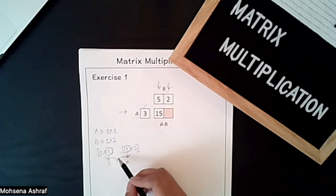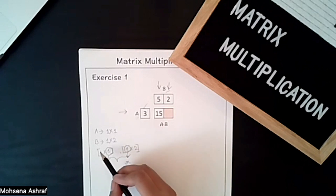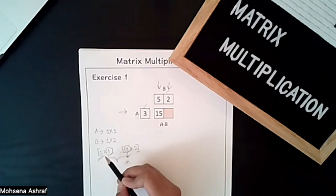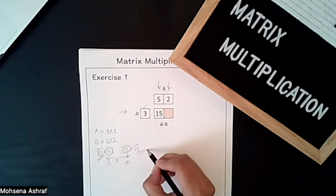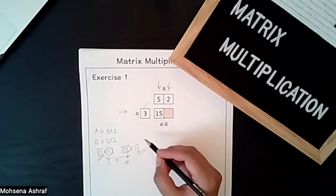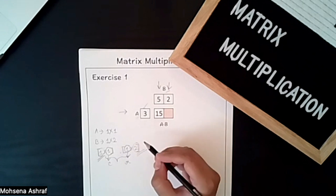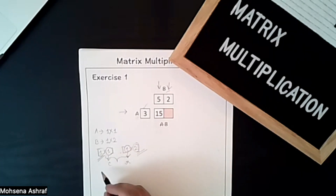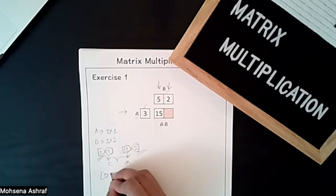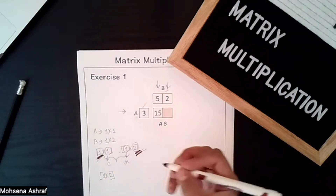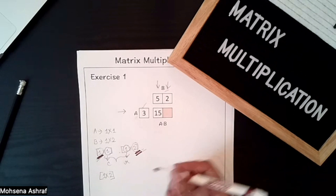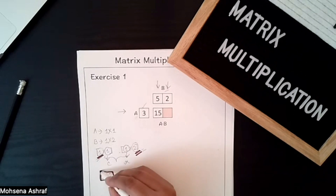The other thing we can get from the dimensions is: the first number of the first matrix (the row) and the last number of the last matrix (the column) give us the resultant matrix's dimension. So multiplying 1×1 by 1×2 gives a resultant matrix with dimension 1×2. The first number and the last number of the second matrix — that is the dimension of the resultant matrix.